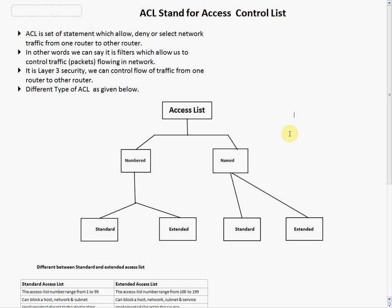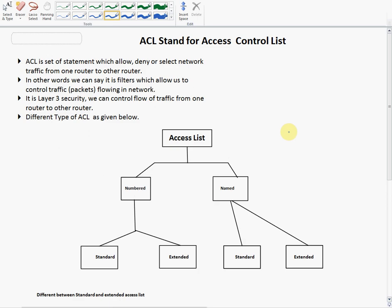ACL stands for Access Control List. ACL is a set of statements which allow, deny, or filter network traffic from one router to another. In other words, it is a filter which allows us to control traffic — that is, packets flowing in a network. It is a layer 3 security, and we can control the flow of traffic from one router to another.